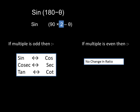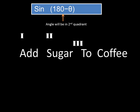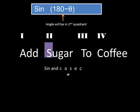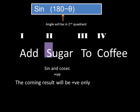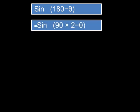Let us take an example: sin(180 − θ). We know that 180 − θ lies in the second quadrant only. Applying the trick 'Add Sugar To Coffee,' in the second quadrant sin and cosec are the only positive trigonometric ratios and others are negative. We have taken sin here, so whatever the result will be, the sign will be positive. Now, 180 − θ can be written as 90 × 2 − θ. The multiple here is even, so as discussed, there will be no change in the trigonometric ratio, and the answer will be sin θ only.